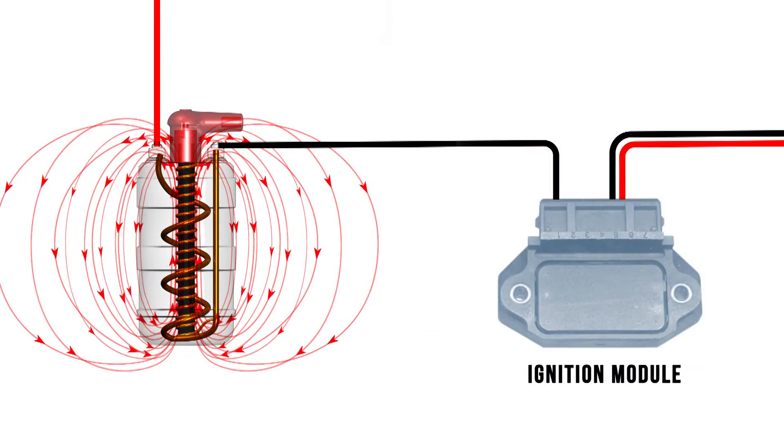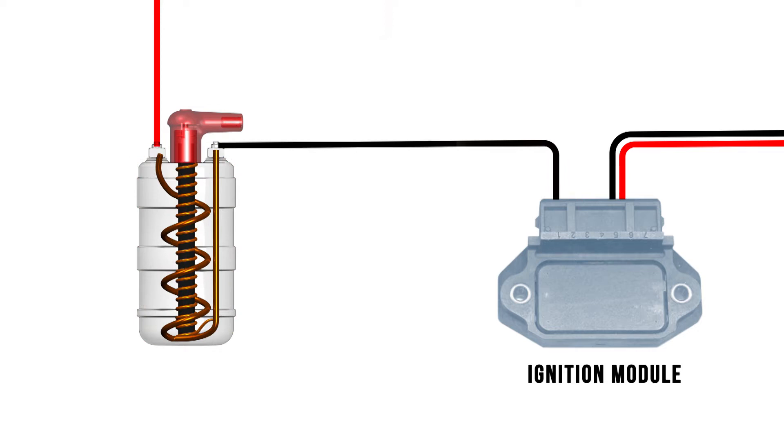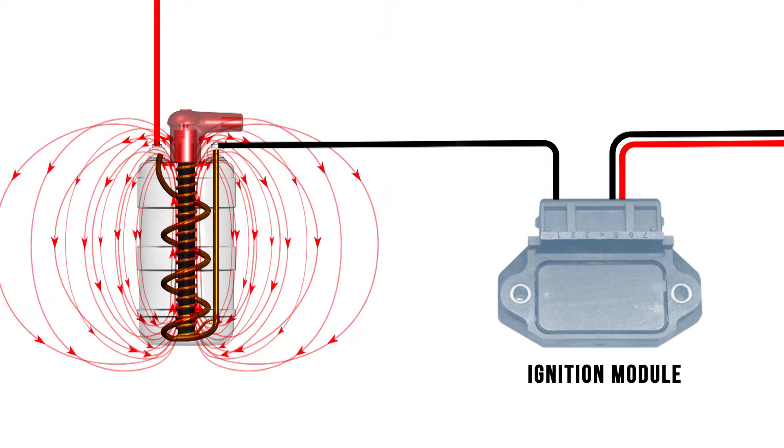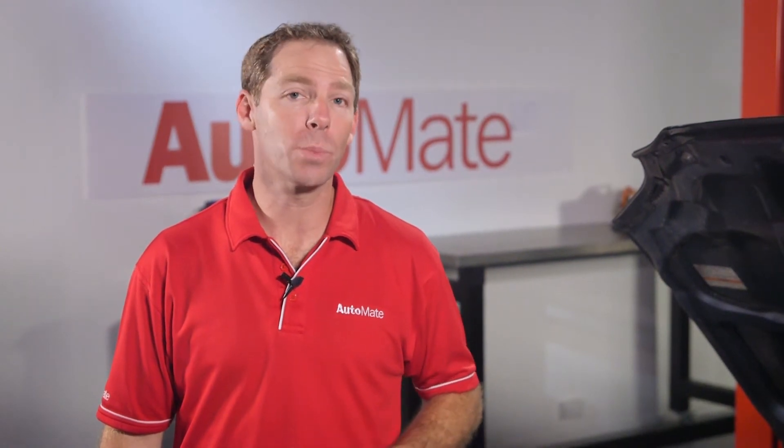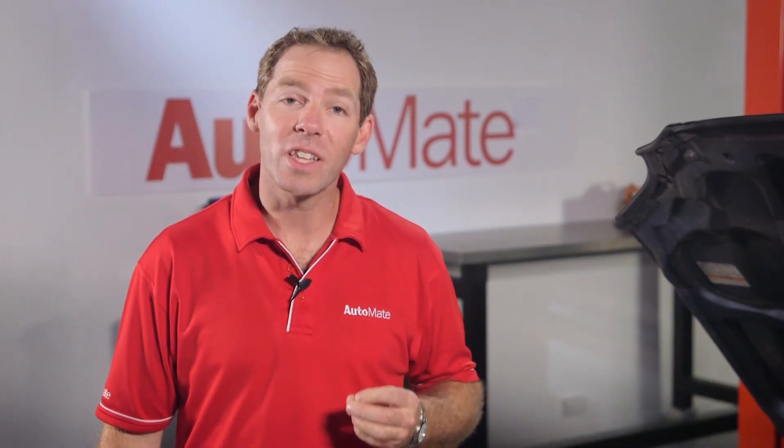And the saturation time for the coil can be varied by electronically altering the dwell angle to suit engine conditions. This allows for a higher energy output and eliminates point bounce at high engine speed, while reducing secondary terminal erosion at low engine speed.